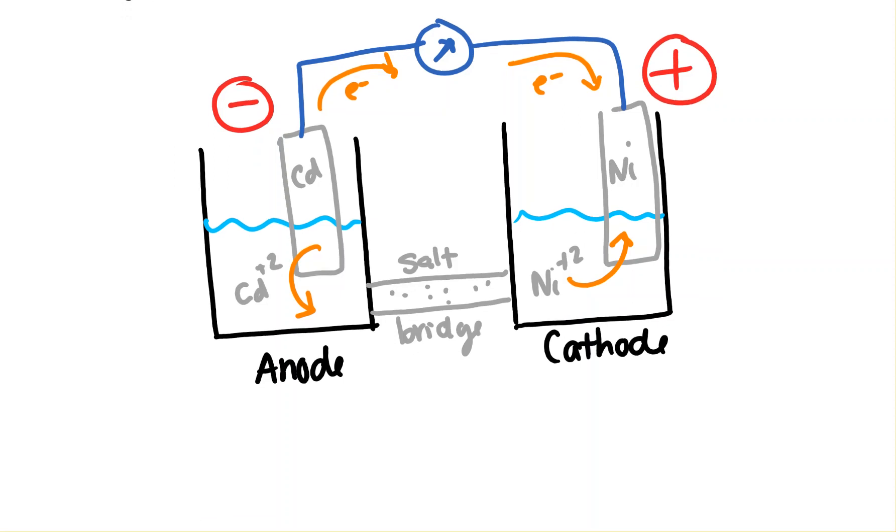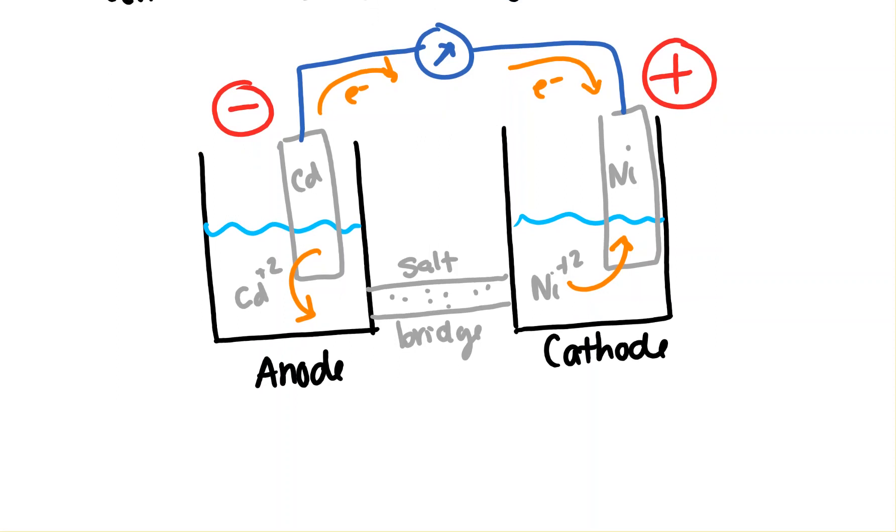And just some terminology, since we have it here, make sure we're clear on what the different things are. The metal is the terminal. I would call this one the positive terminal. This whole apparatus here could be called an electrode or a half cell.